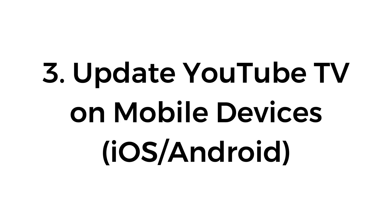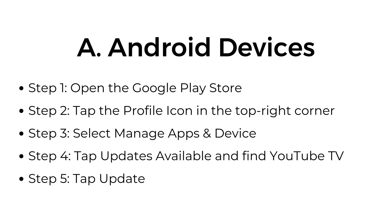Number three: update YouTube TV on mobile devices. For Android devices: step one, open the Google Play Store. Step two, tap the profile icon in the top right corner. Step three, select 'Manage Apps and Device.' Step four, tap 'Updates Available' and find YouTube TV. Step five, tap Update.